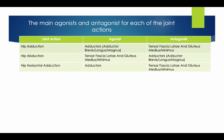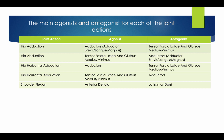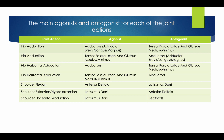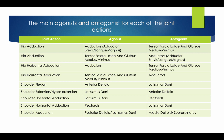For hip horizontal abduction, the agonist is the adductors and the tensor fasciae latae and gluteus medius and minimus. For shoulder flexion, the agonist is the anterior deltoid and the antagonist is the latissimus dorsi. Shoulder extension/hyperextension: latissimus dorsi and anterior deltoid. Shoulder horizontal adduction: pectorals and latissimus dorsi. Shoulder horizontal abduction: latissimus dorsi and pectorals. Shoulder abduction: middle deltoid or supraspinatus, with the antagonist being the posterior deltoid and latissimus dorsi. Shoulder adduction: posterior deltoid/latissimus dorsi and middle deltoid or supraspinatus.